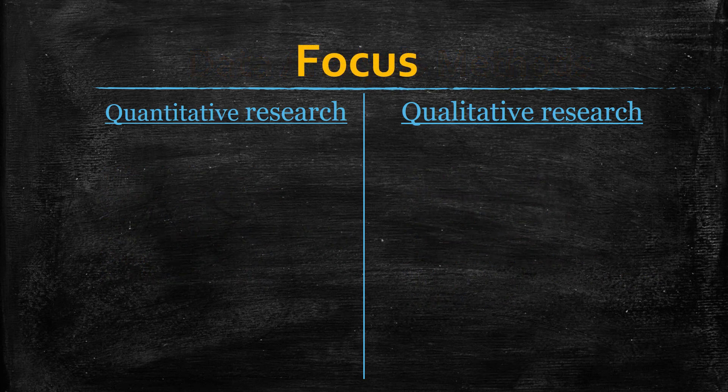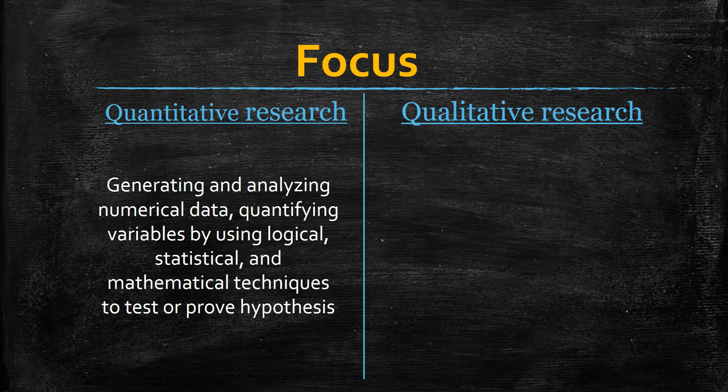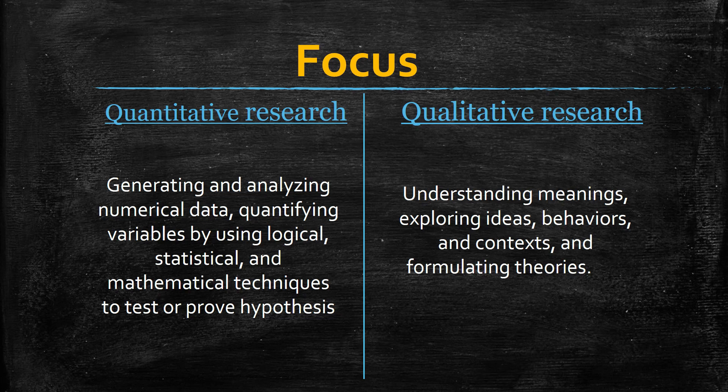In the quantitative method, the purpose is generating and analyzing numerical data, quantifying variables by using logical, statistical, and mathematical techniques to test or prove hypotheses. While in the qualitative method, the purpose is understanding meanings, exploring ideas, behaviors, and contexts, and formulating theories.